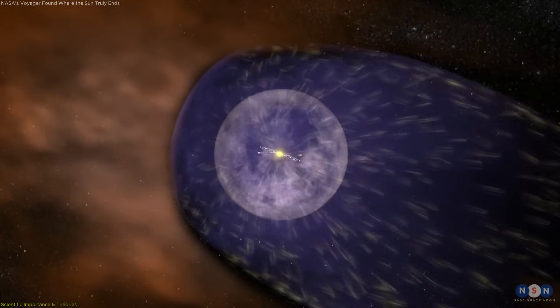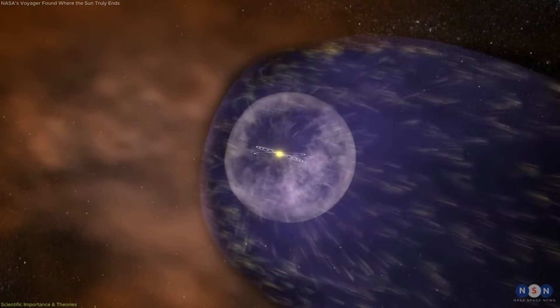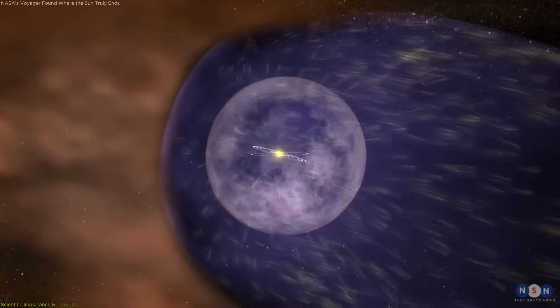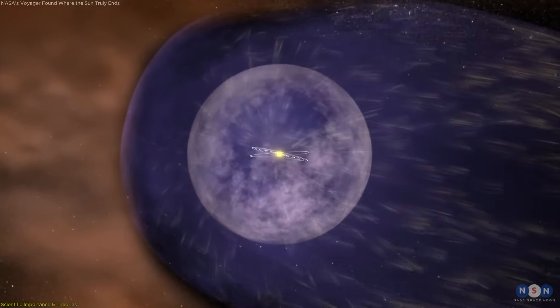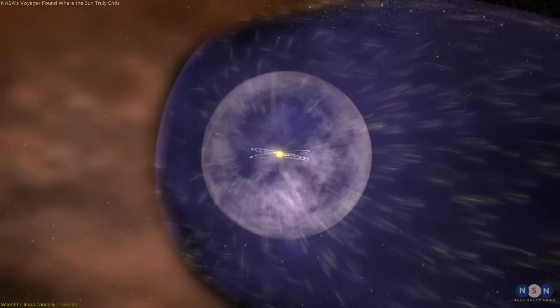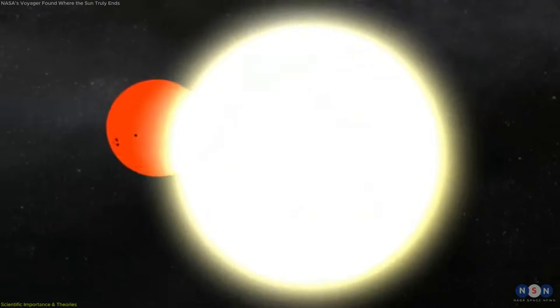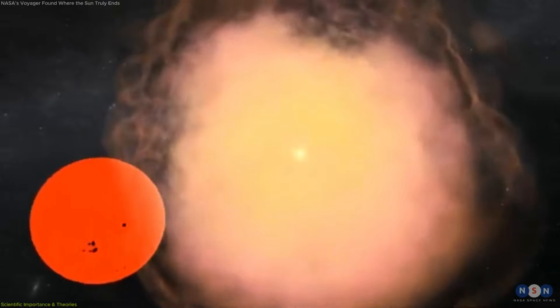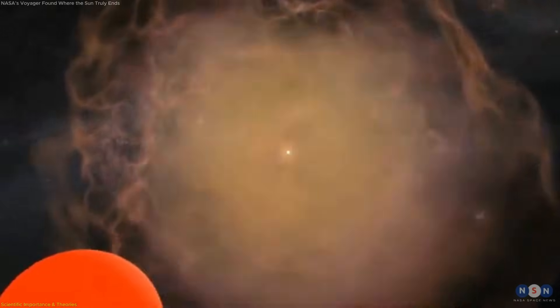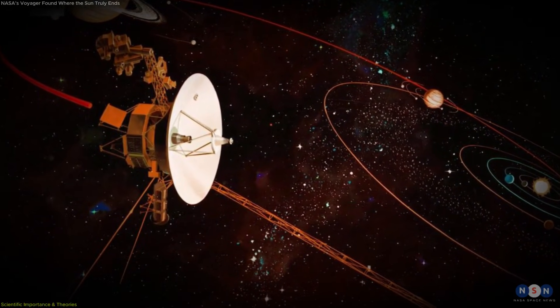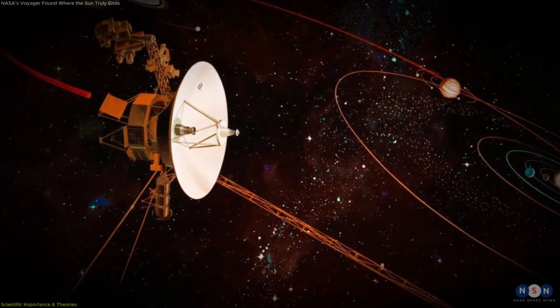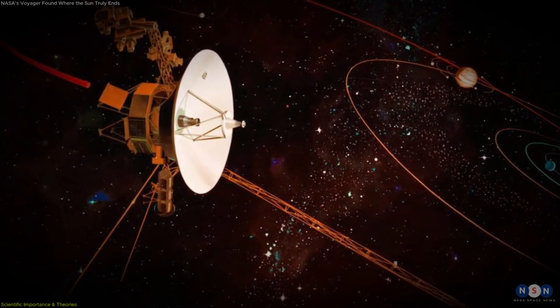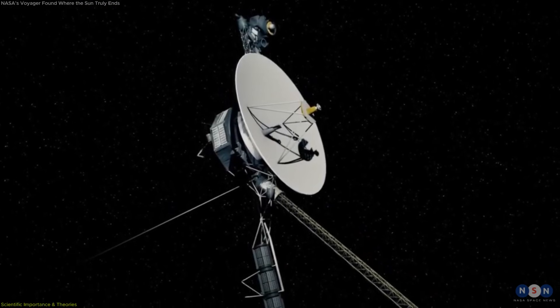The heliopause is not just a line in space. It is part of a protective system that shields the solar system from a significant fraction of high-energy radiation that fills the Milky Way. Galactic cosmic rays, which are produced by distant supernova explosions and other energetic events, travel through interstellar space at nearly the speed of light. The heliosphere deflects many of these particles, reducing the radiation that reaches the inner planets.